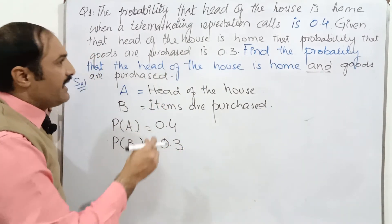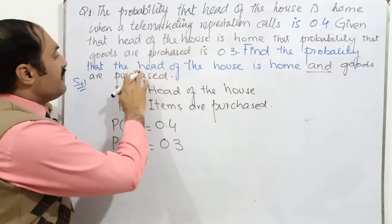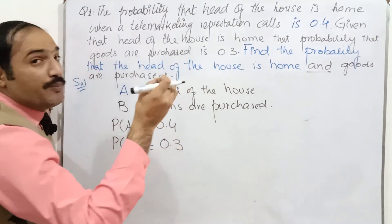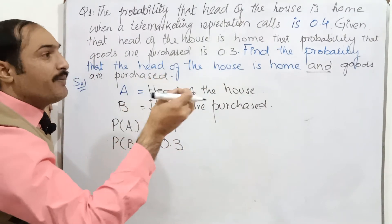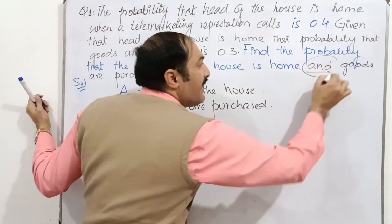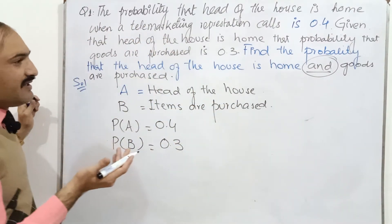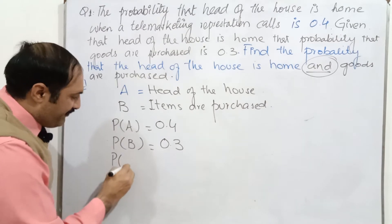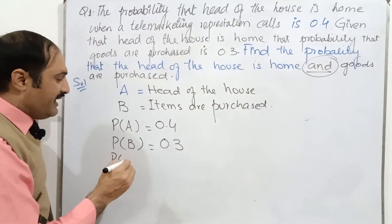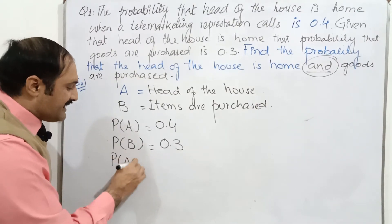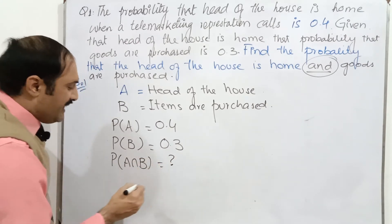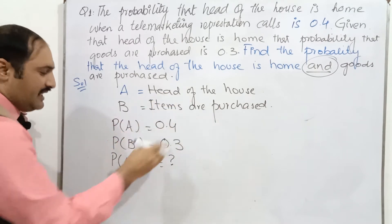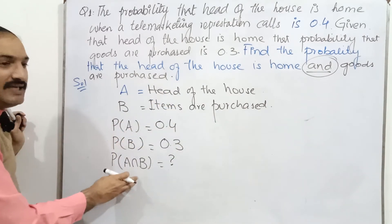Now, find the probability that the head of the house is home and goods are purchased. Why I am emphasizing on 'and' — 'and' means probability of A intersection B, meaning we will find the probability that the head of the house is home and items are purchased.